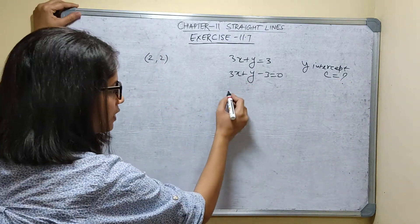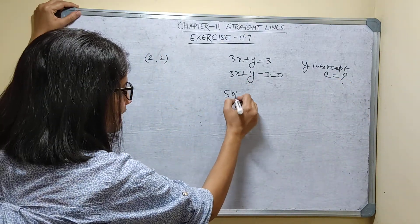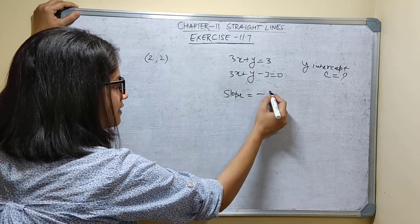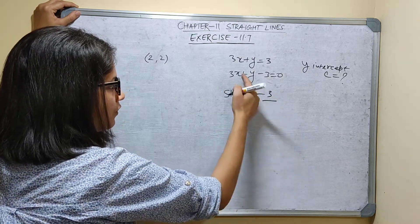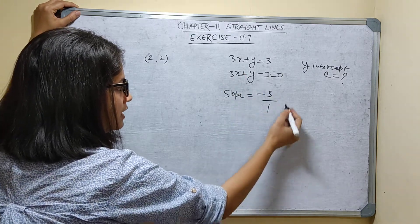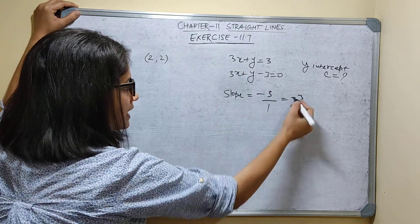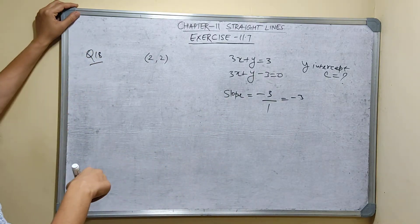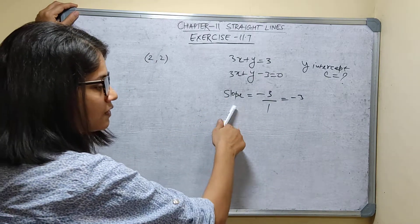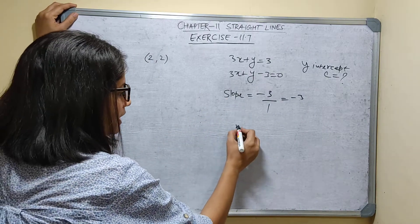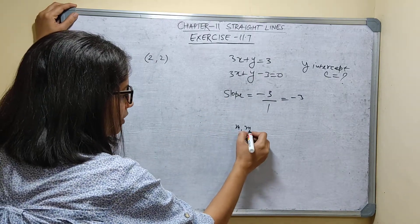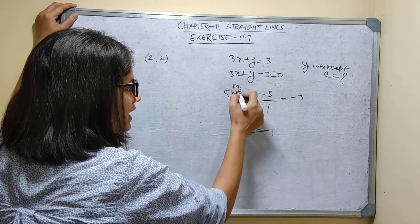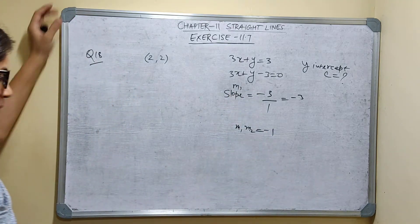First, I will find the slope for this line. The slope is: minus coefficient of x upon coefficient of y, which is minus 3 divided by 1, so the slope M1 is minus 3. For the required line and this line to be perpendicular, the product M1 times M2 must equal minus 1.